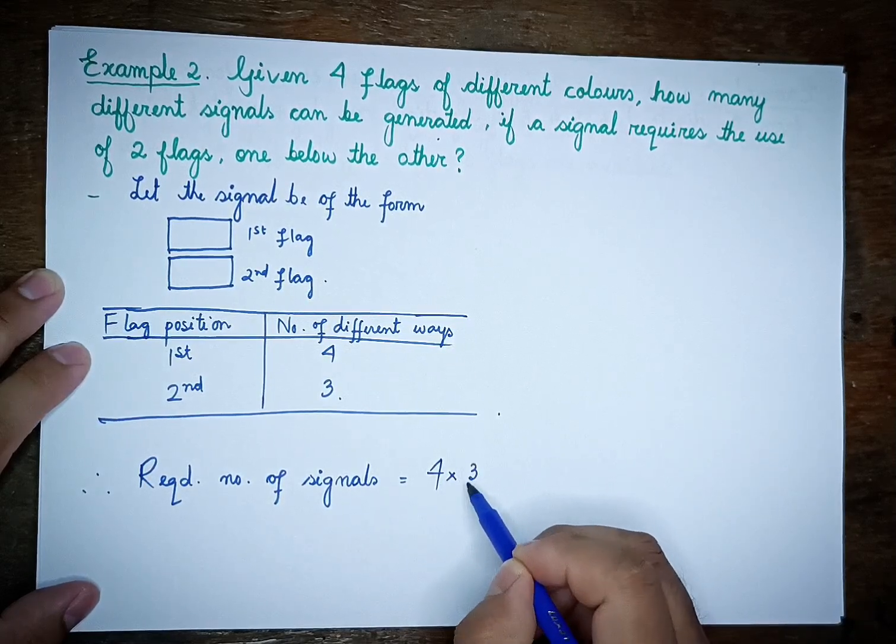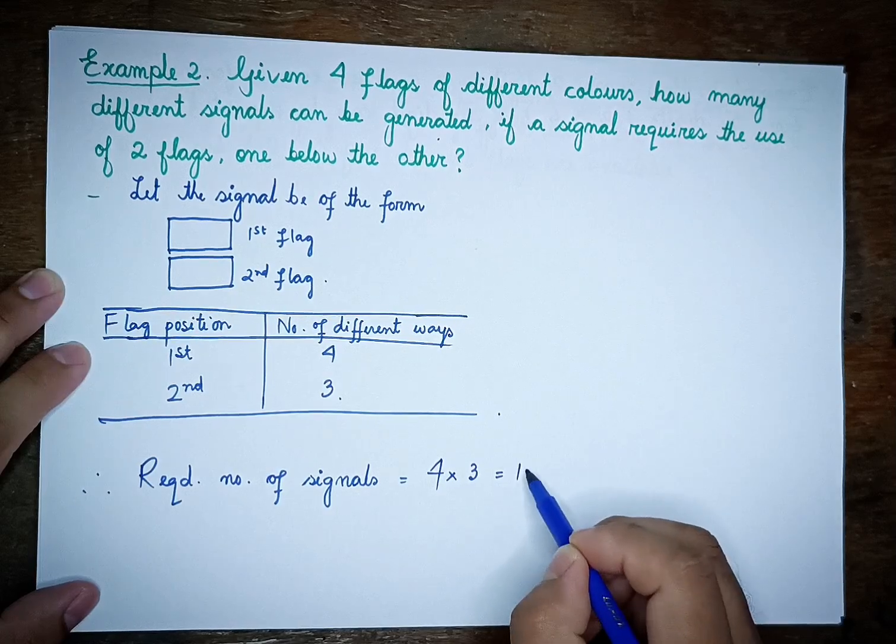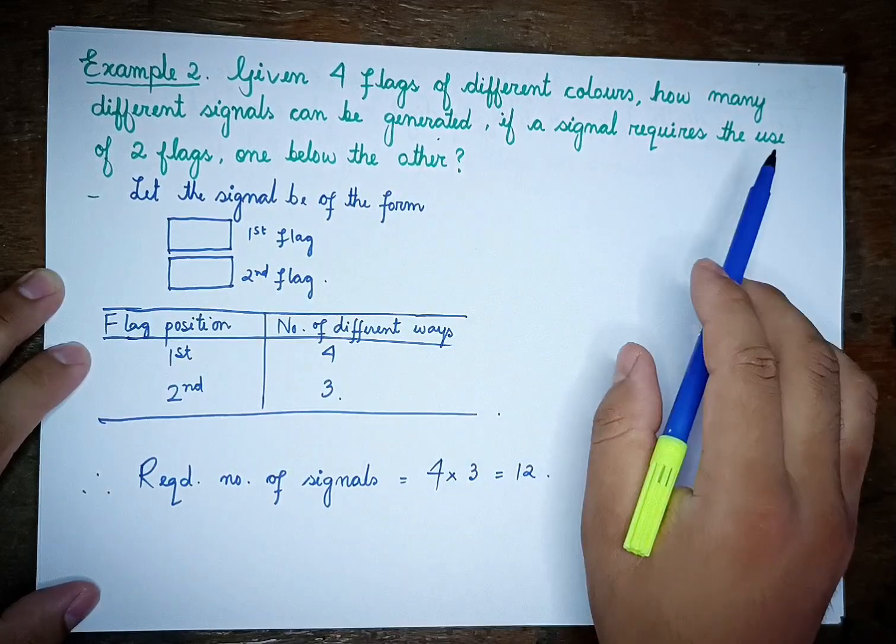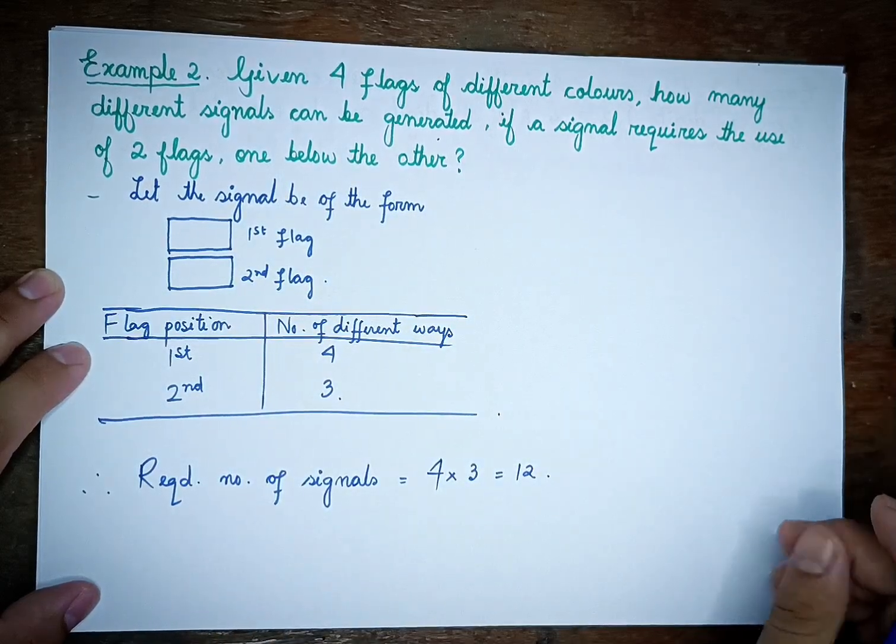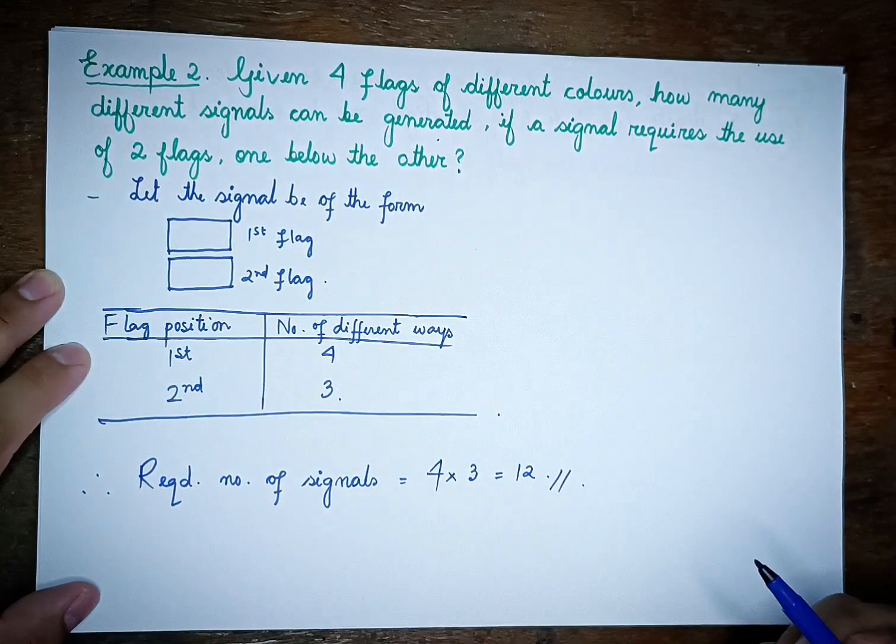4 times 3 equals 12. So the number of different signals that can be generated is 12.